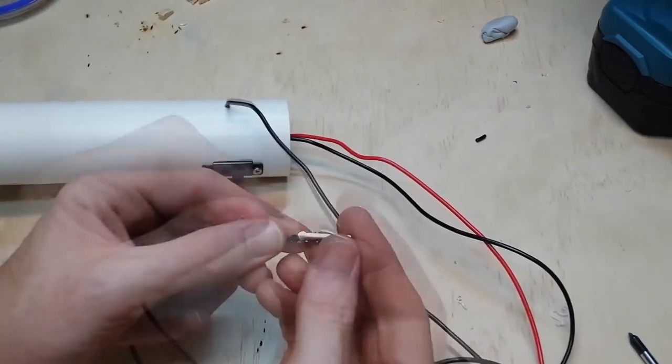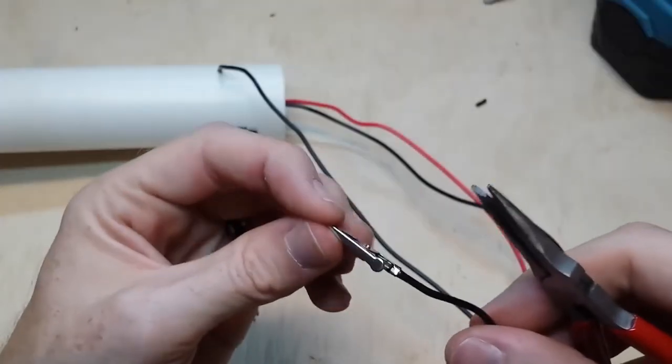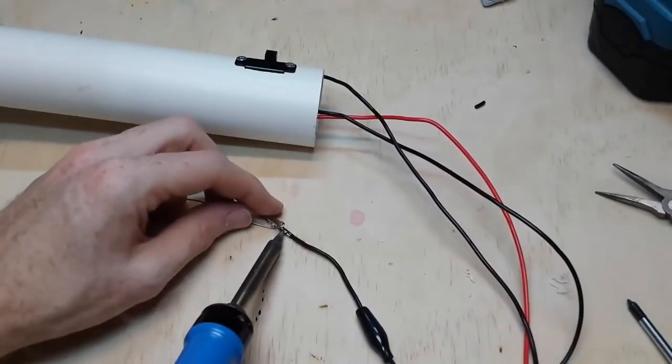I attach an alligator clip to the negative grounding wire using pliers and solder to get a good electrical connection.